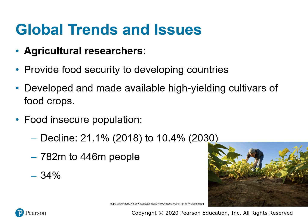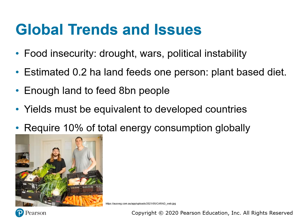That means a reduction from about 800 million to 450 million people — still many people experiencing food insecurity. Overall, this decline in intensity of food insecurity is about 34 percent. Food insecurity exists in all countries but is especially severe in areas of drought, wars, and political instability. It's estimated that about 0.2 hectares of land is required to feed one person on a plant-based diet. There's enough land to feed about 8 billion people, but this requires yields in the developing world to be equivalent to those in developed countries, which would require about 10 percent of total energy consumption globally — much more than currently used.